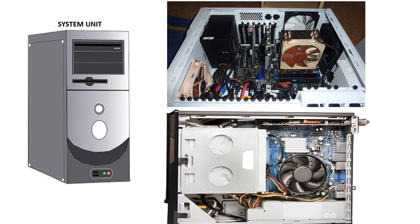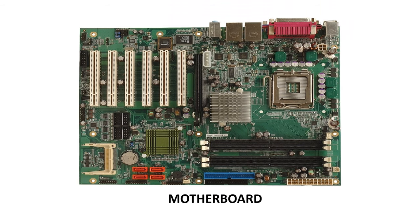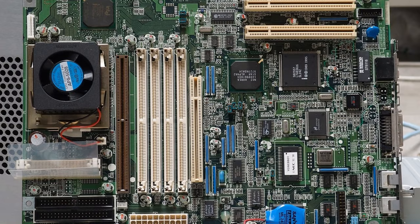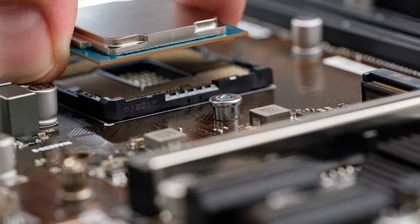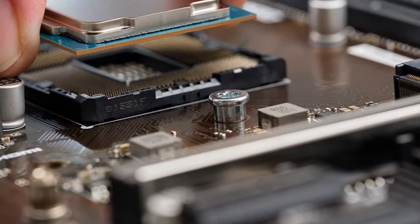Internal hardware are hardware found inside the system unit. The motherboard is the central circuit board found inside the system unit; all other hardware are plugged into the motherboard. The central processing unit, or CPU, is the brain of the computer. It is responsible for all data processing, and is placed in the CPU socket on the motherboard.